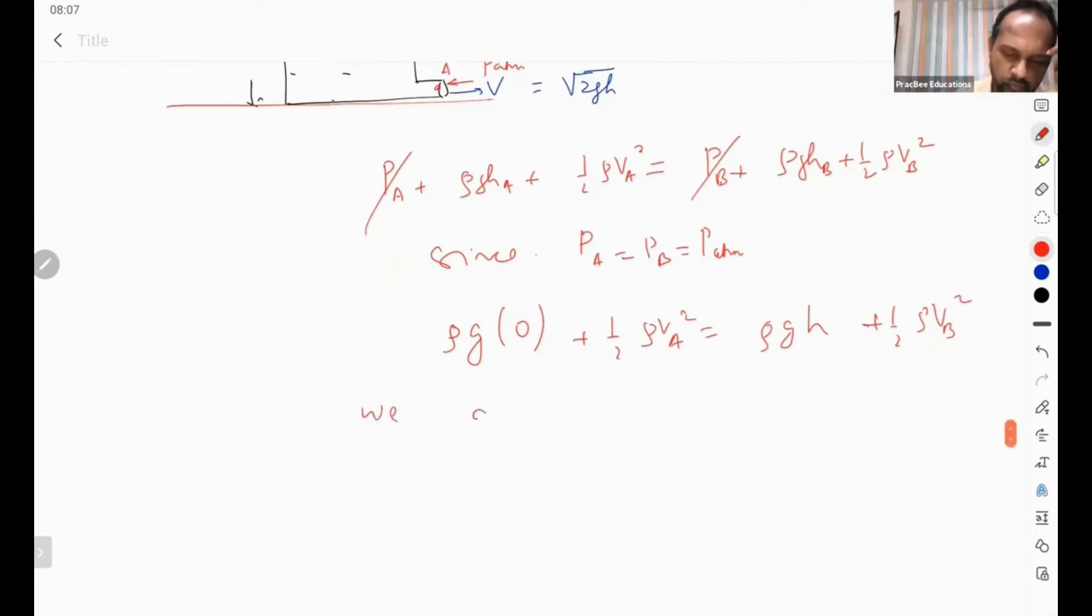So we also know that A_a, that is area of cross section at a into velocity at a is equal to A_b into velocity at b. Okay.